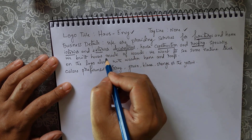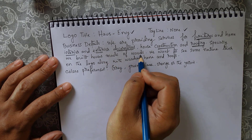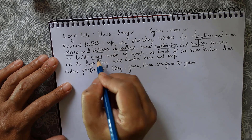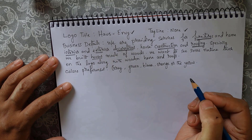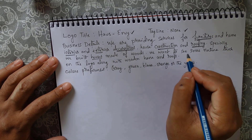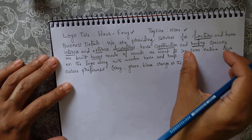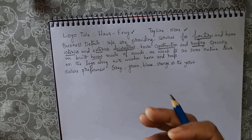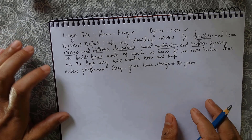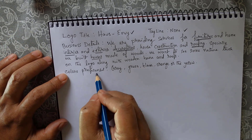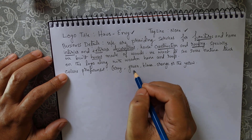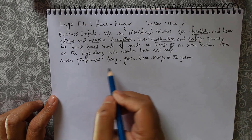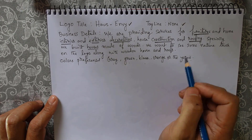Especially they build houses made of wood, so the house is a very important element here that we need to focus on. They want to see some natural things reflected and combined in their logo. The color preferences are gray, green, black, orange, or yellow — this color recommendation also tells us that the customer is looking to see some nature touch in their logo.